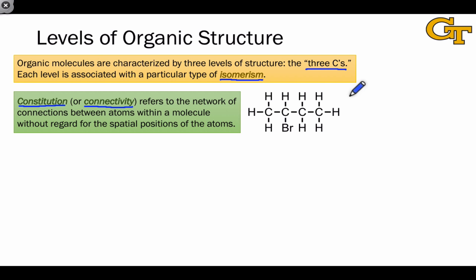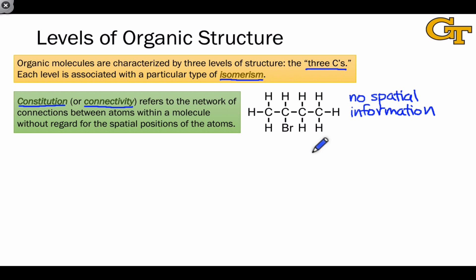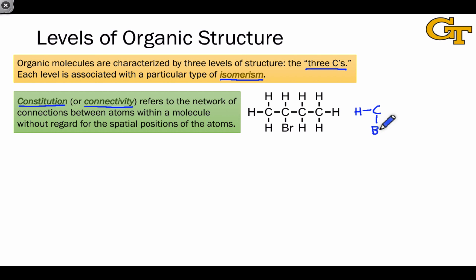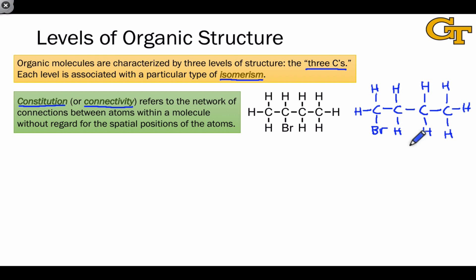Constitution is usually depicted using diagrams that imply no spatial information. This is built into the fact that we would expect each carbon in this structure to be tetrahedral — four electron pair domains around each carbon — but this cross-type structure obscures that three-dimensional information. Molecules with different connectivity are referred to as constitutional isomers. As an example, we could put the bromine at a different position; both molecules share the same molecular formula but differ in constitution, the way the atoms are connected to each other.